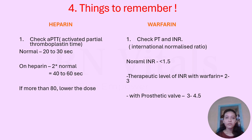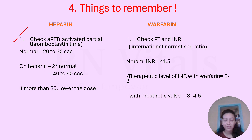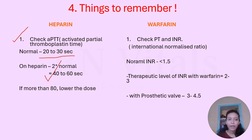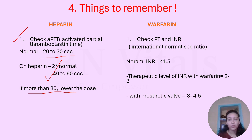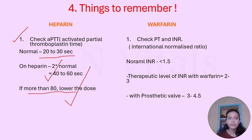Now let's talk about the four most important things to remember about these drugs. For heparin, we need to check APTT — activated partial thromboplastin time — which normally ranges from 20 to 30 seconds. If a patient is on heparin, the therapeutic level should be twice the normal, around 60 seconds. Less than 80 is acceptable, but if APTT goes above 80, you need to lower the dose to reduce the risk of internal bleeding.